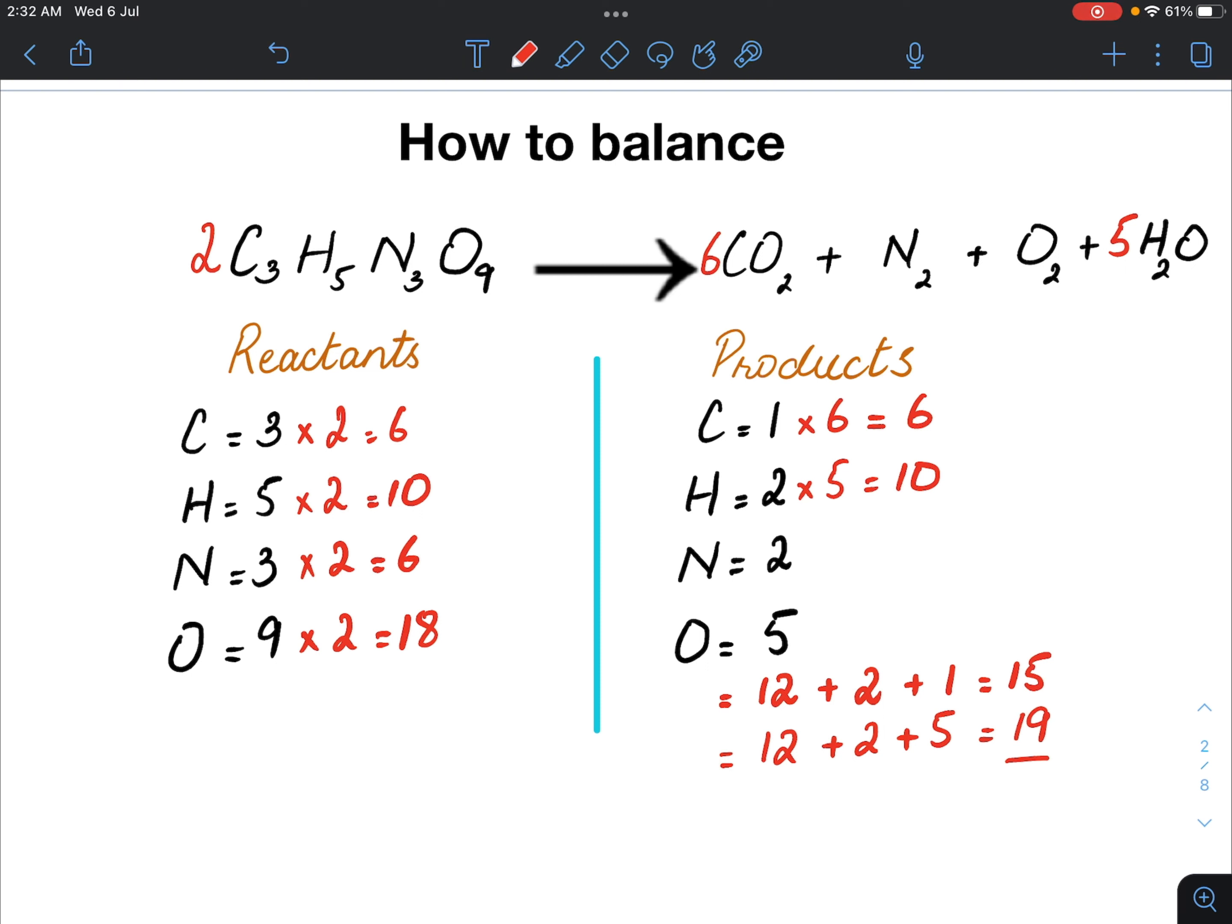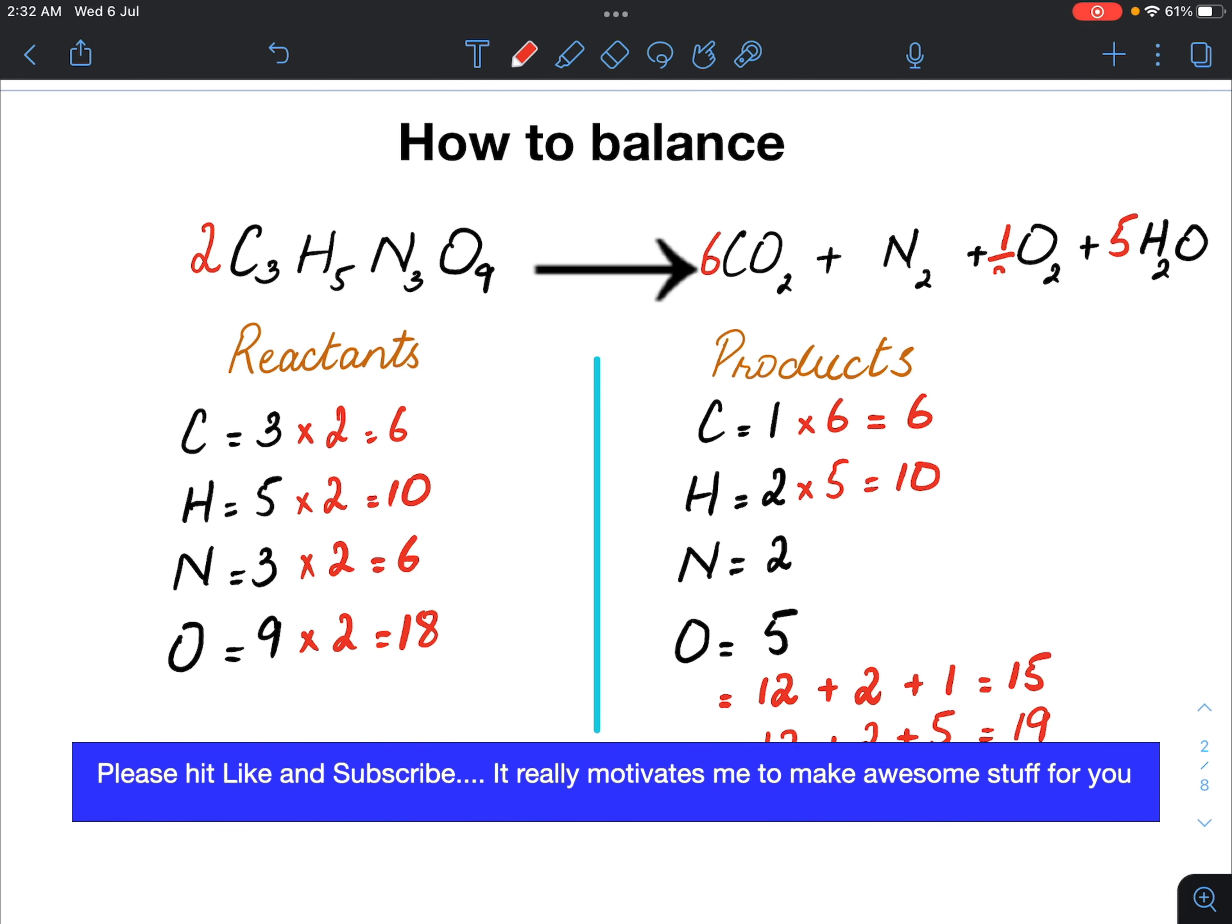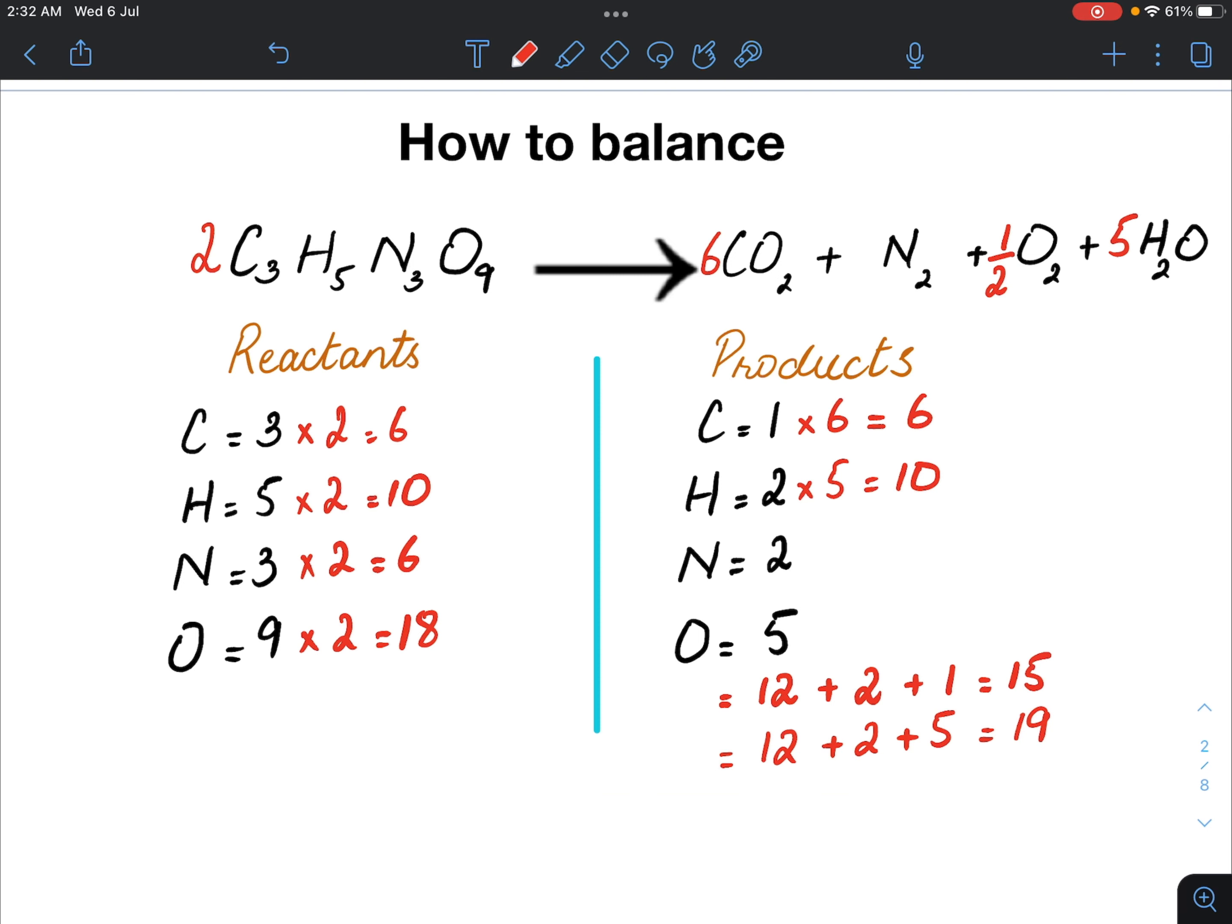This here and this here are not balancing. So, let's see. If I put half here, the fraction 1 over 2, it means that I get 1 oxygen atom from the molecular oxygen. So now, I again count the number of oxygens. 12 plus 1 plus 5 and I get 18. Now, this oxygen is balanced.